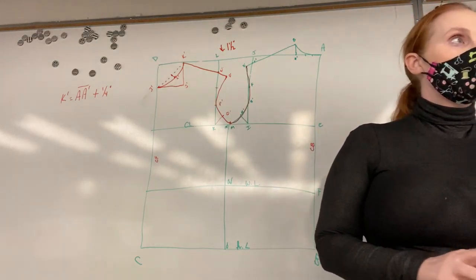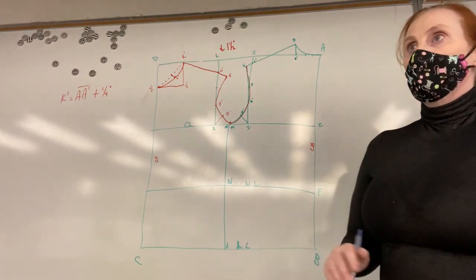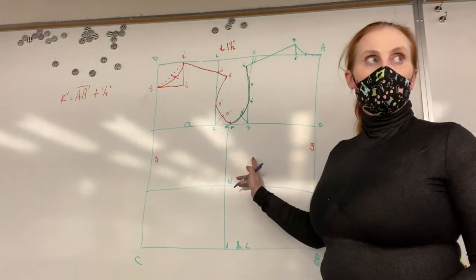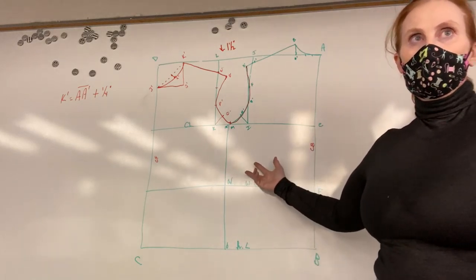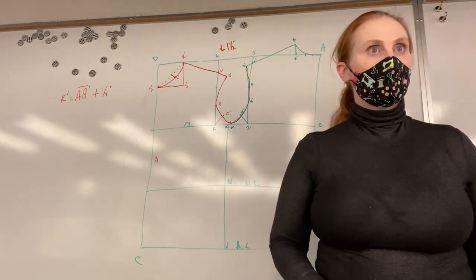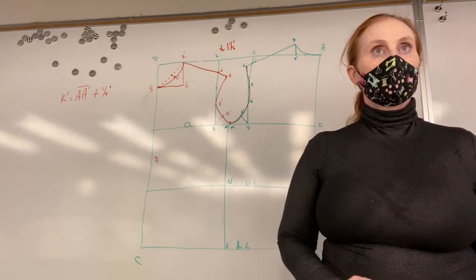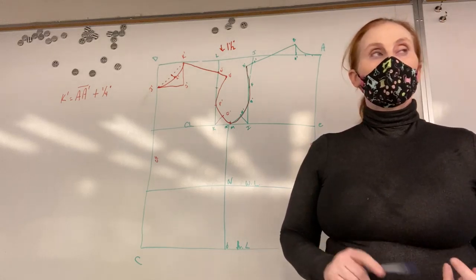Once you have those two measurements, or three measurements I guess, then you can go ahead and separate these pages. Now for me, looking at these pages, what are they still missing? They're missing a grain line.